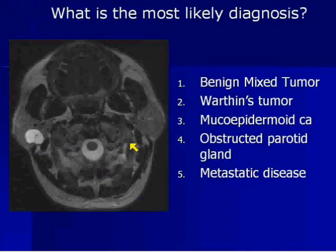Now that you see this, what's the most likely diagnosis? Is it: 1, benign mixed tumor; 2, Warthen's tumor; 3, mucoepidermoid carcinoma; 4, an obstructed parotid gland; or 5, metastatic disease? The answer is a benign mixed tumor.